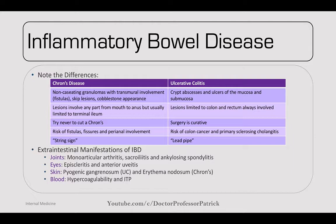Now IBD — inflammatory bowel disease. Focusing on differences between Crohn's disease and ulcerative colitis. Crohn's is a non-caseating granuloma with transmural involvement, has skip lesions, and classically shows cobblestoning. Ulcerative colitis involves only mucosa and submucosa (crypt ulcers) — no fistulas, no skip lesions. UC goes from the rectum upward continuously; Crohn's can skip anywhere from mouth to anus. Crohn's most commonly affects the terminal ileum. UC always involves the rectum.